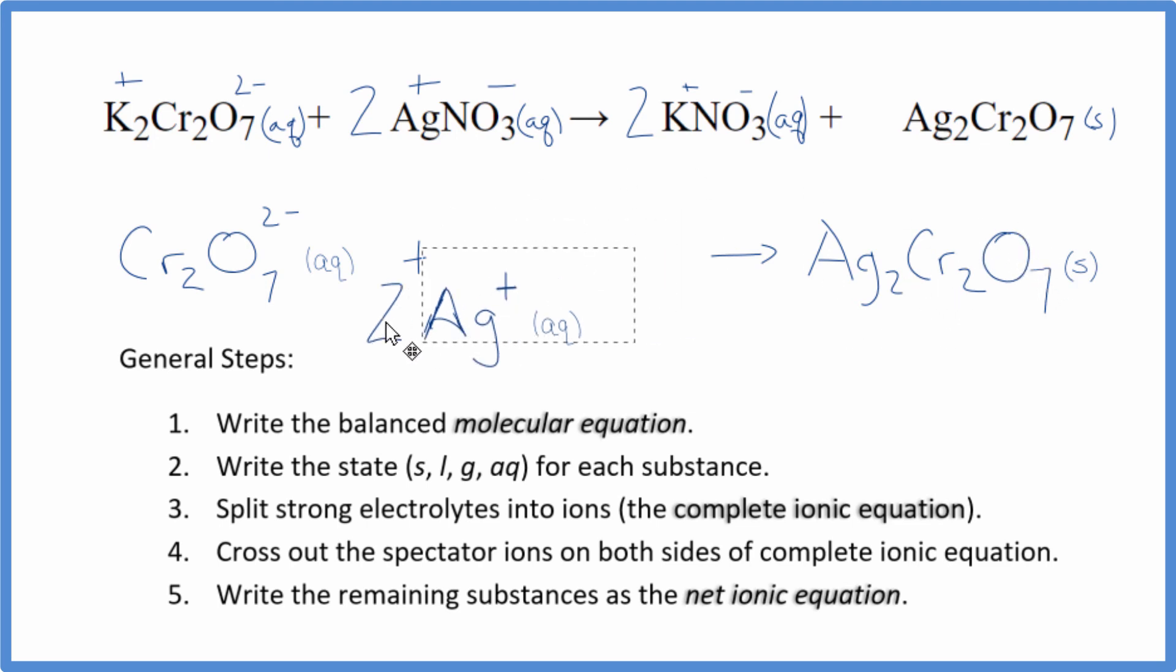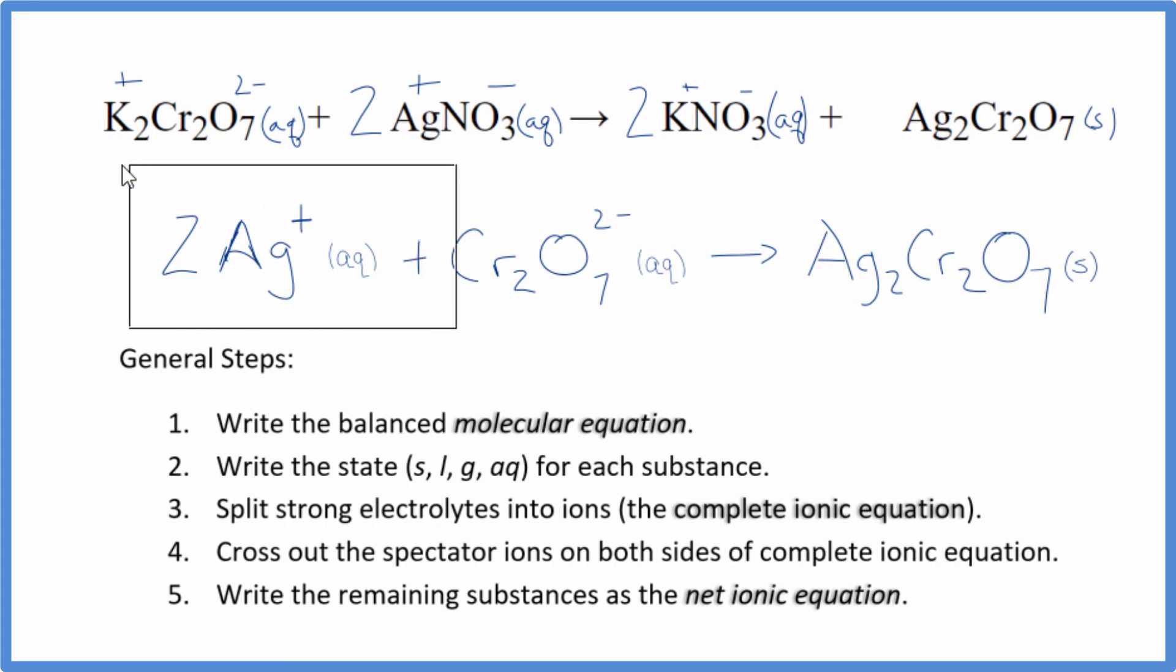We sometimes see the positive ion written first in net ionic equations. It doesn't really matter. Maybe it looks a little bit nicer. And that's it. This is the net ionic equation for K2Cr2O7 plus AgNO3. This is Dr. B. Thanks for watching.